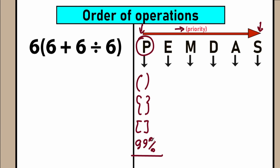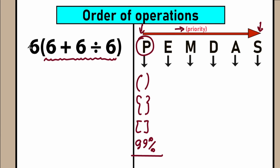So we need to start with parentheses — let's find where we have them in our expression. We have parentheses right here, so let's underline all of this. The first step is to evaluate the expression inside parentheses — in other words, get it down to one value. Once we do that, we can multiply it by 6 at the last step, so let's set that multiplication aside for now.